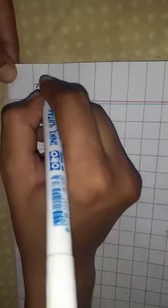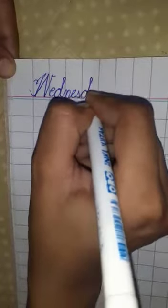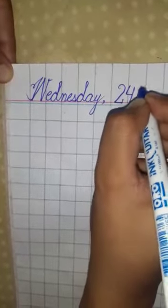First of all we put the date. Wednesday, comma, 24th, June, comma, 2020, full stop.